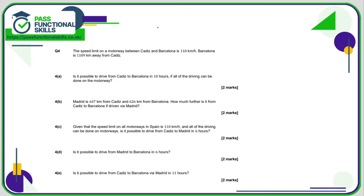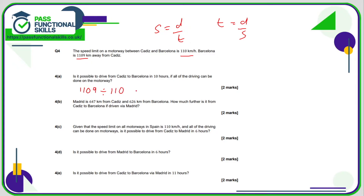With all these questions we need to remember the formula: speed is distance divided by time. So Cadiz to Barcelona is 1,109 kilometres — can it be done in 10 hours? Well, time is distance divided by speed, so 1,109 divided by the maximum motorway speed of 110 kilometres per hour comes to 10.08 hours, which is slightly more than 10 hours, so no, that is not possible.